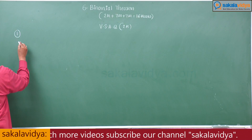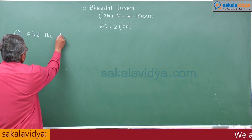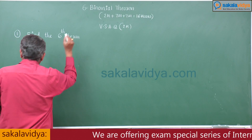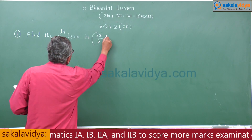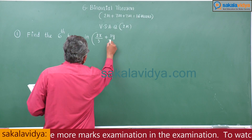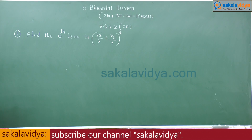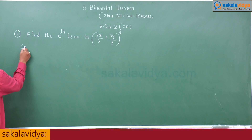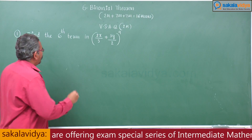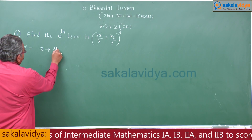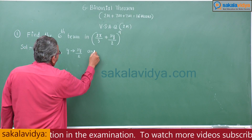First problem: find the sixth term in the expansion of (2x/3 + 3y/2)^9. That means we have to find out the sixth term. First, let us compare the given expansion to the (x + y)^n form. Here x corresponds to 2x/3, y corresponds to 3y/2, and n is equal to 9.